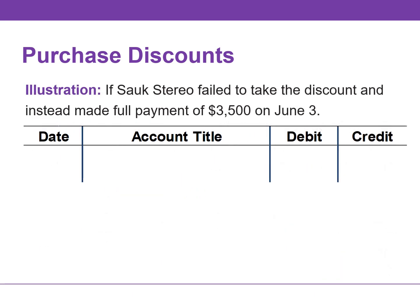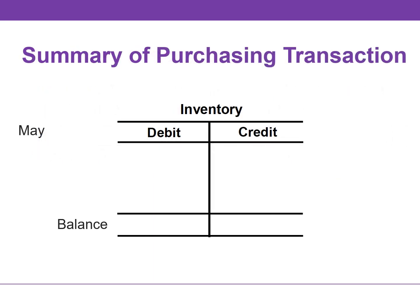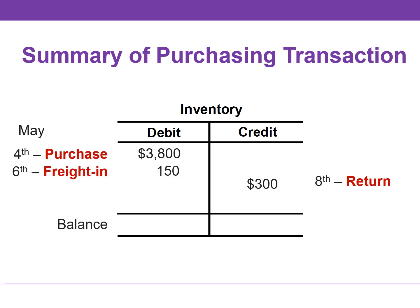If Salk Stereo failed to take the discount and instead made full payment of $3,500 on June 3rd, they would debit accounts payable and credit cash for $3,500. The following T-account provides a summary of the effect of the previous transactions on inventory. Salk Stereo originally purchased $3,800 worth of inventory, returned $300, paid $150 in freight charges, and received a $70 discount for paying within the discount period. This results in a balance of $3,580 in inventory.